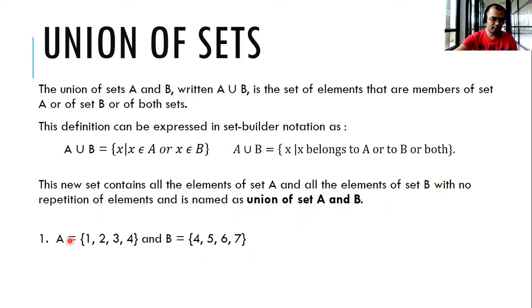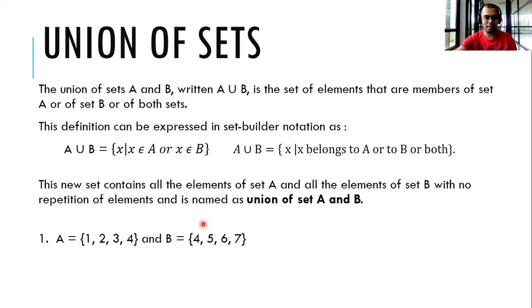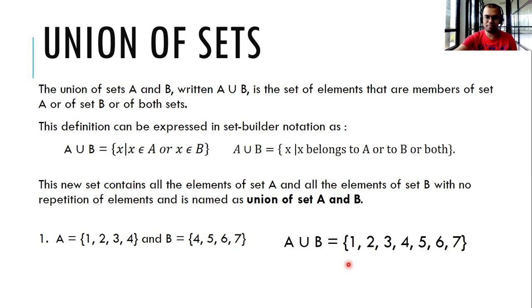Example number one: let set A be the set {1, 2, 3, 4} and set B be the set {4, 5, 6, 7}. Notice that we have element 4 in set A and we also have element 4 in set B. We will only take one element of it in finalizing our answer because we are not allowed to have repetitions. The union of A and B is {1, 2, 3, 4, 5, 6, 7}.